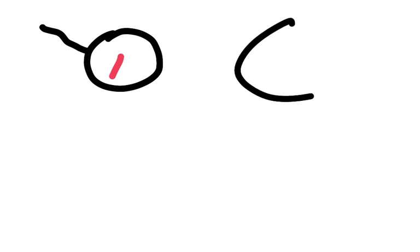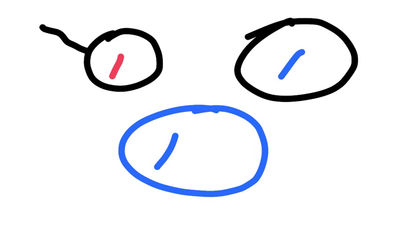So after we talked about the purpose of meiosis, we're going to look at what actually happens. We start with a sperm with one chromosome, and we start with an egg with one chromosome. They fertilize, and you produce a 2N cell.